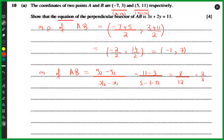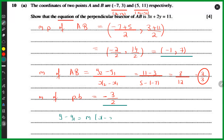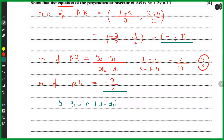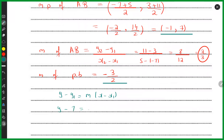I'm not interested in AB itself — I need the equation of the perpendicular bisector. The gradient of the perpendicular bisector is the negative reciprocal of 2/3, which is -3/2. Now I have a point (-1, 7) on the perpendicular bisector and its gradient, so I can use y - y1 = m(x - x1): y - 7 = -3/2 (x + 1).